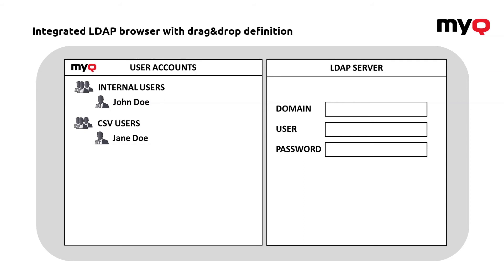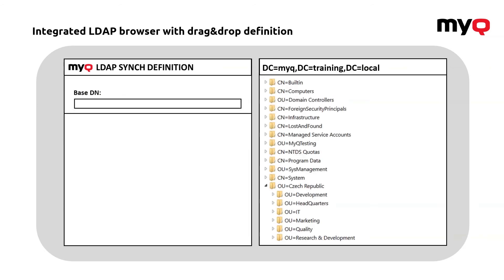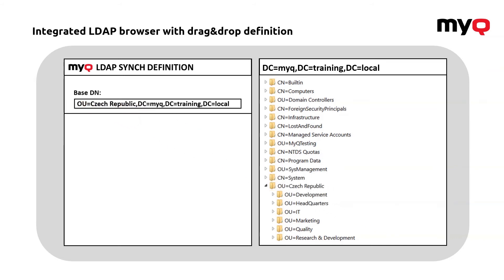The first thing to do is to define a connection to your LDAP server. I will just show the domain and the user which should be able to work with the database. Then the system will automatically load the actual structure of the database. What you have to do is find the spot, find the thing you would like to use. For example, our users are here under the organizational unit Czech Republic. To get all the users and all the subgroups, I just have to use the drag-and-drop option and put this into the base DN. The system will automatically reconfigure that into the actual path, so you don't have to worry about mistyping anything — the system does that for you.